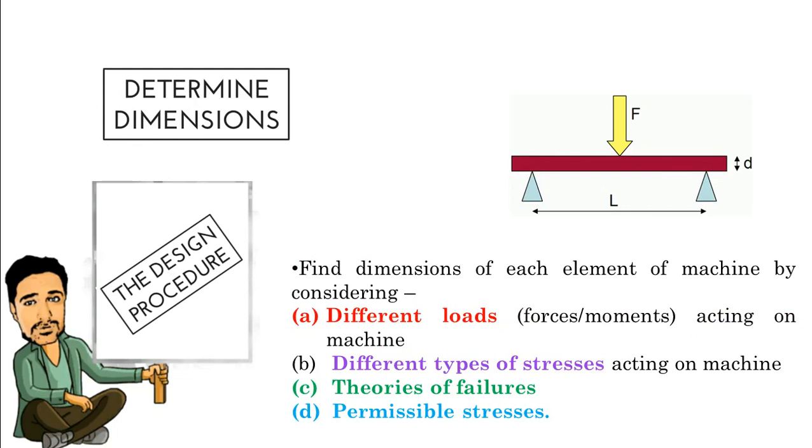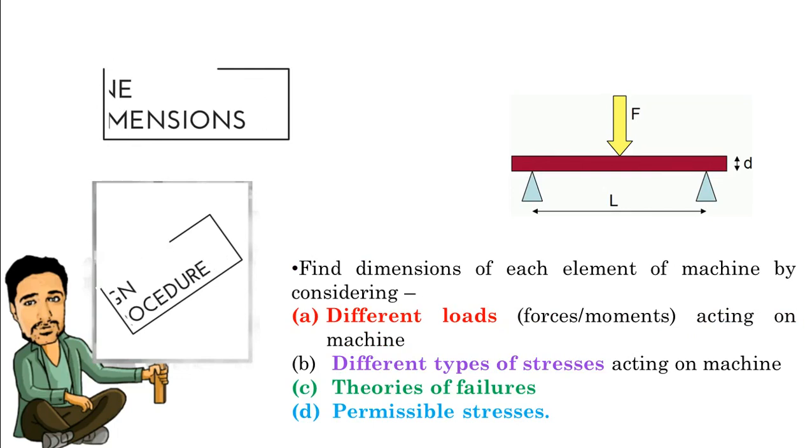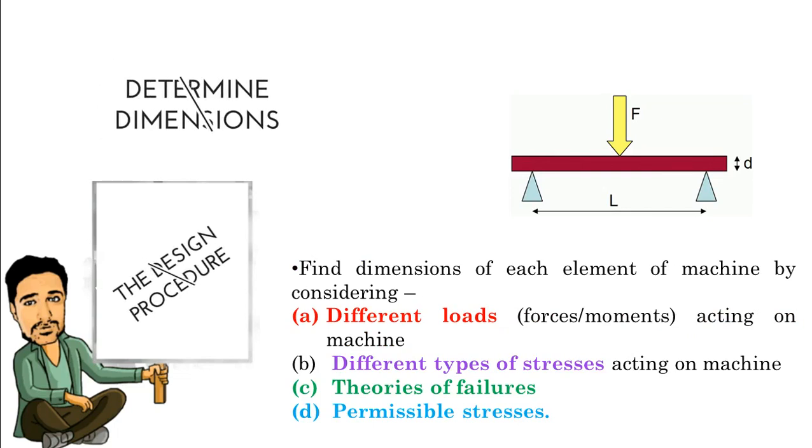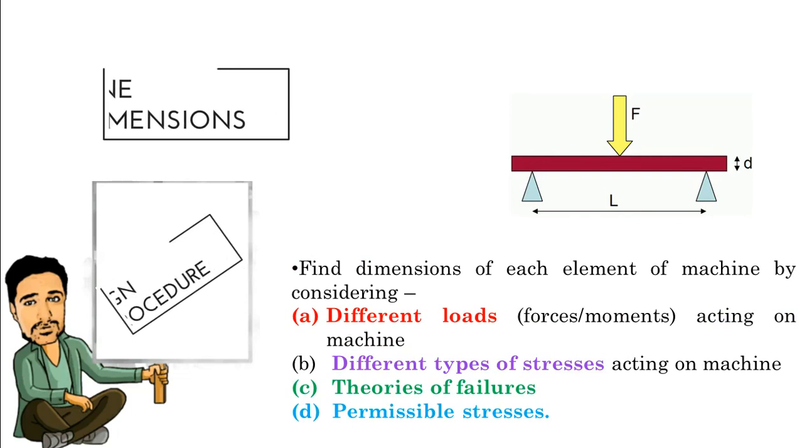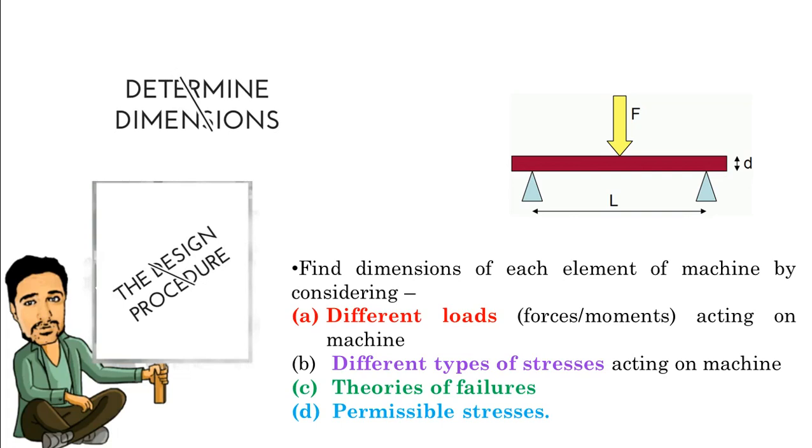Next step is to determine dimensions. Find out all the loads, forces, moments acting on the machine. Determine the different types of stresses acting on the machine. Apply the theories of failure like maximum principal stress theory, maximum shear stress theory, distortion energy theory, column mode theory, and then find out the permissible stresses or allowable stresses that are acting on the machine elements.